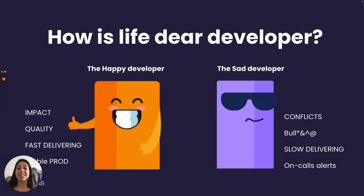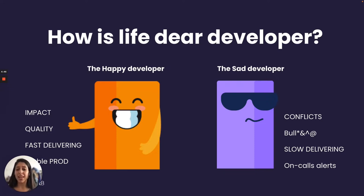On the other hand, the sad developer struggles — working very slowly with lots of context switching, not even coding most of the time, handling many conflicts, rarely developing new features, and very unsatisfied with their current situation.